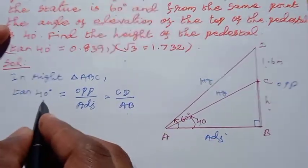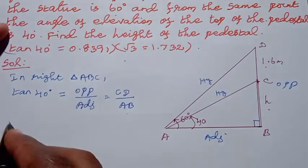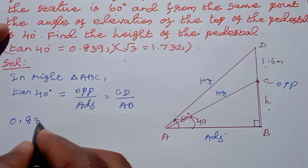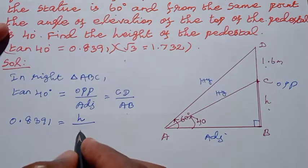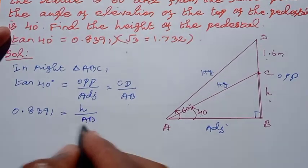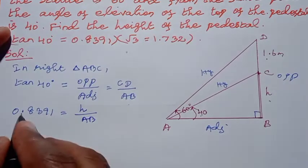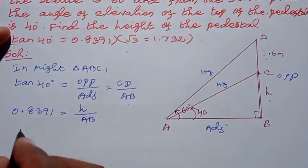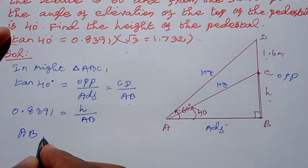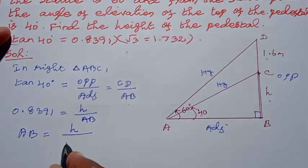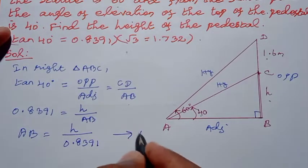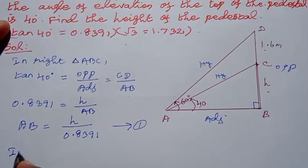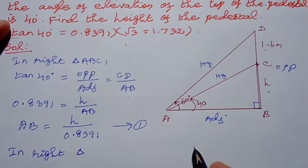Tan 40 degrees equals opposite side by adjacent side, which is CD by AB. The value of tan 40 is 0.8391. So CD equals 0.8391 times AB. This is equation number 1.